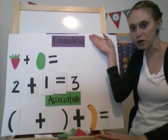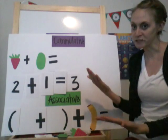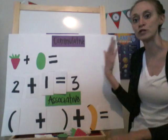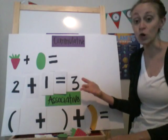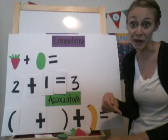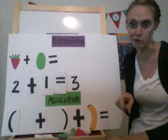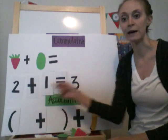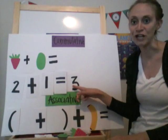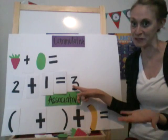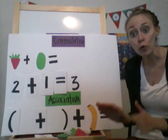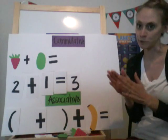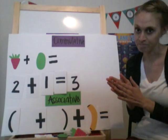The commutative property shows us that it doesn't matter the order in which we add things or multiply things. It's the same with multiplication — it doesn't matter the order that we add them, our answer is still going to be the same. That's only with addition and multiplication.